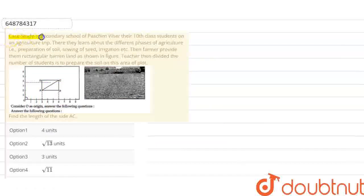Given question, I have a case study here. Secondary School of Pashchim Bihar. There are 10th class students on an agriculture trip. Then they learn about the different phases of agriculture - that is preparation of soil, sowing of seed, irrigation, etc. The farmer provided them a rectangular barren land as shown in the figure. The teacher divided the number of students to prepare the soil on this area of a plot.